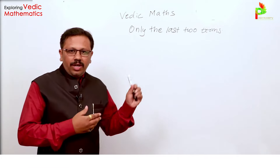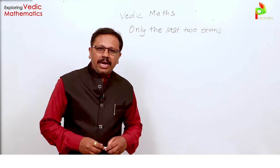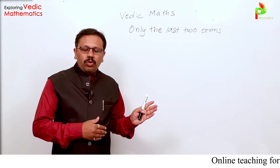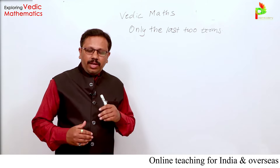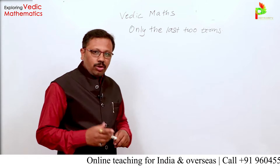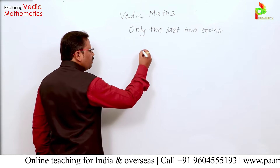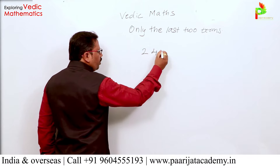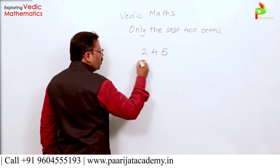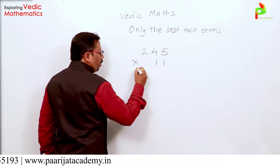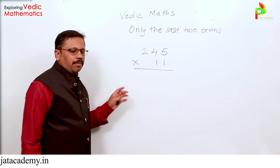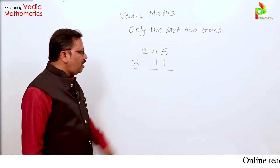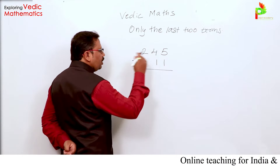So students, we have just learned how to multiply any 2-digit number by 11. Now we are going to learn how to multiply by 11 when the number has more than 2 digits. Let's learn with one example. Suppose the number is 245 times 11 — this is a 3-digit number.